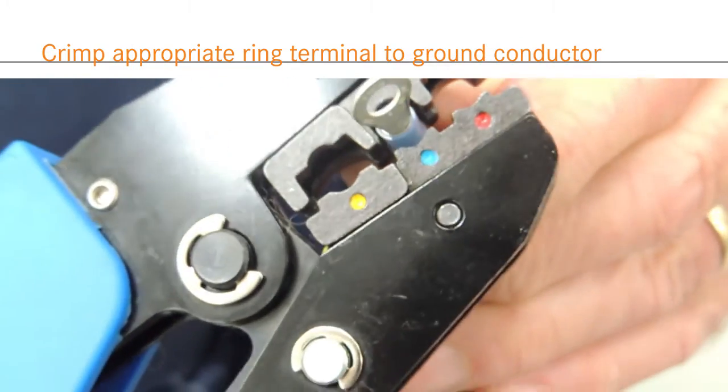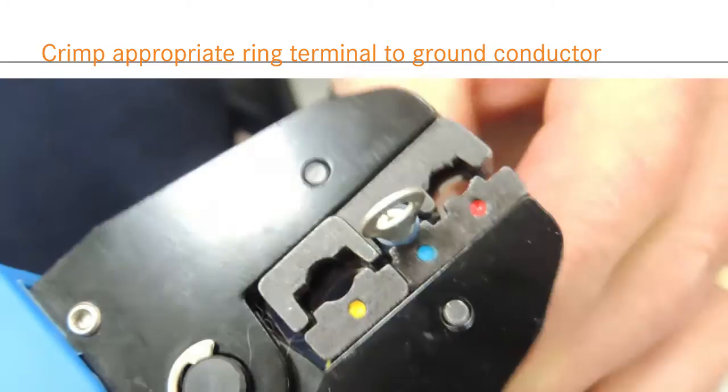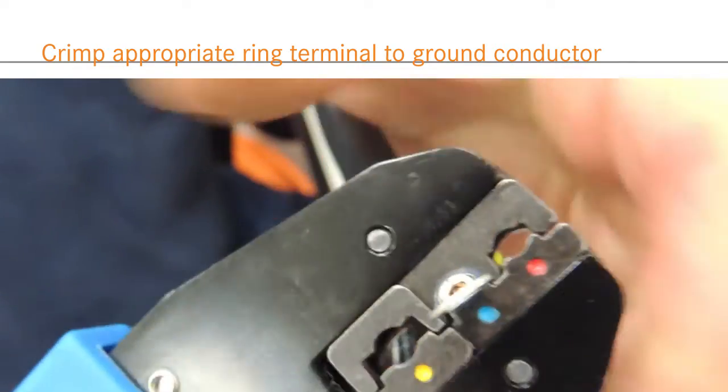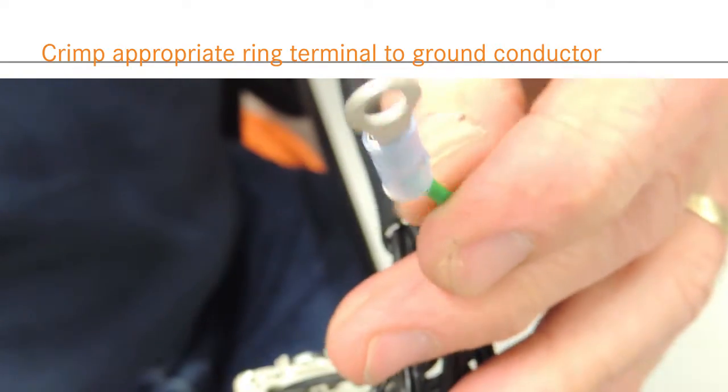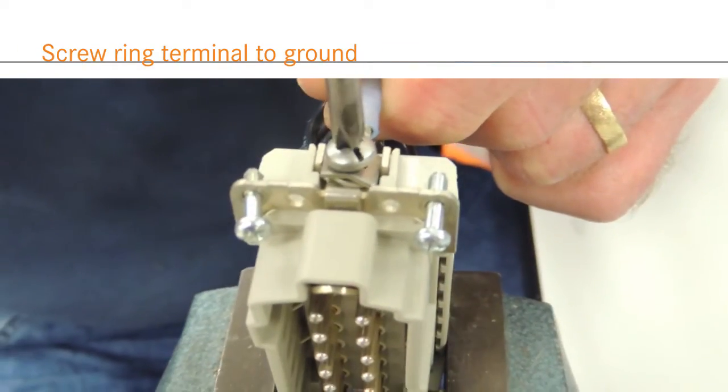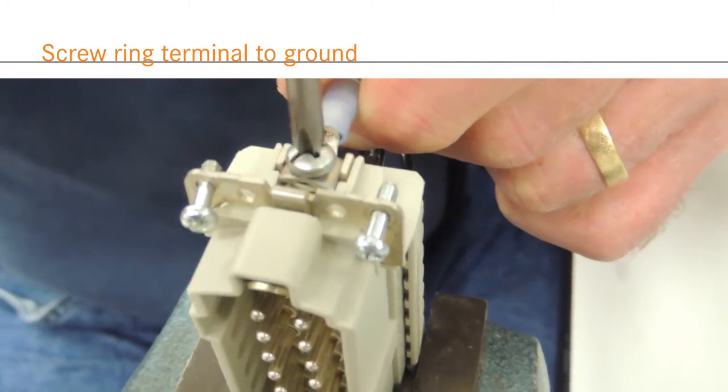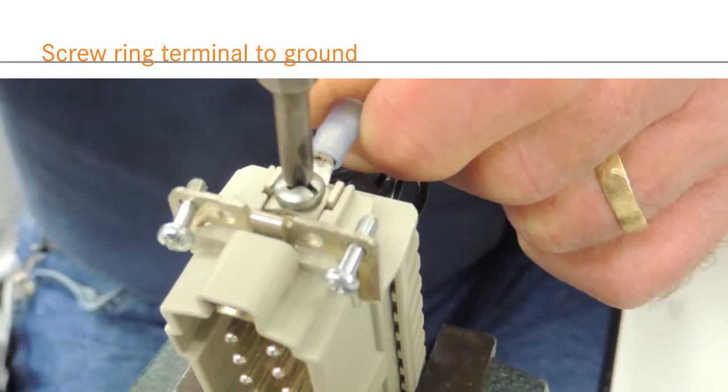Terminate the ground contact by crimping the appropriately sized ring terminal to the contact. Remove the grounding screw and plate and affix the ground.